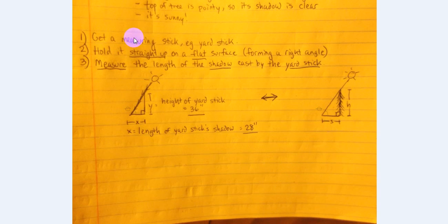So the first step here is to get a measuring stick. I'm going to use the yard stick as an example throughout this problem. You can use a meter stick or just a regular ruler, whatever floats your boat. You want to hold it straight up, just like the tree grows straight up, on a flat surface just like that ground horizon being flat. And of course, that would also form a right angle.